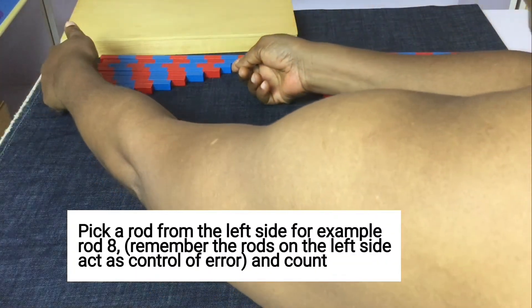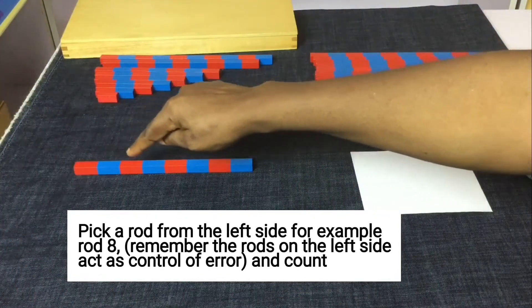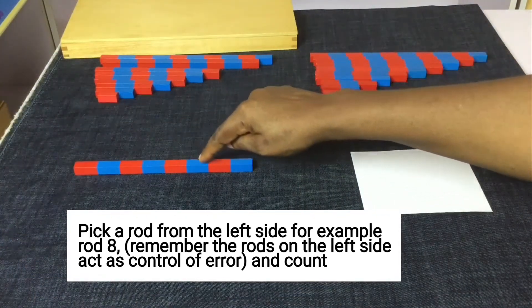Pick a rod from the left side, for example rod 8. Remember, the rods on the left side act as control of error.